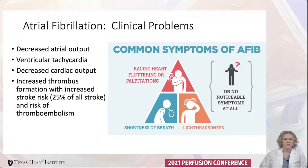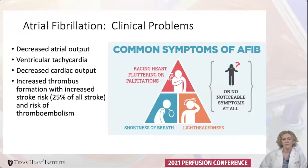AFib clinically leads to decreased atrial output, ventricular tachycardia, decreased cardiac output, increased thrombus formation, and increased stroke risk. AFib produces about 25% of all known strokes and also increases thromboembolism. Common symptoms include palpitations, shortness of breath, fatigue, decreased quality of life, and decreased exercise tolerance, but some patients have no symptoms at all.